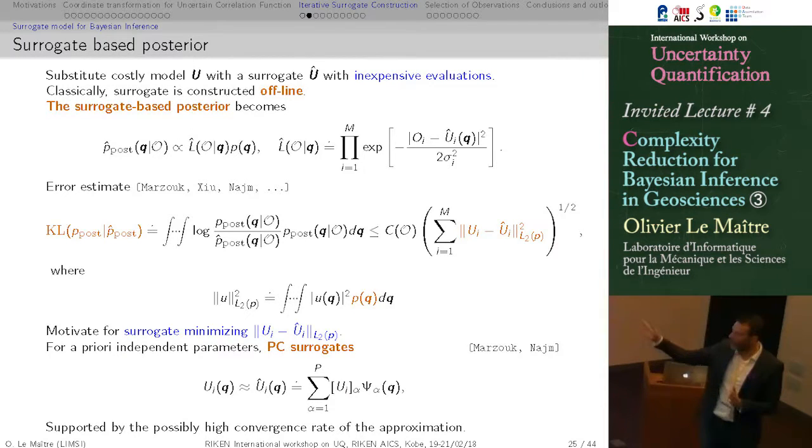However, there is a small problem in this bound is that the constant in this bound is depending on the observation. And what is happening is that if the observations are very informative, so that the prior concentrates into a very narrow posterior, this norm here is not able to control this error on the very narrow domain. So the constant here can become very large.